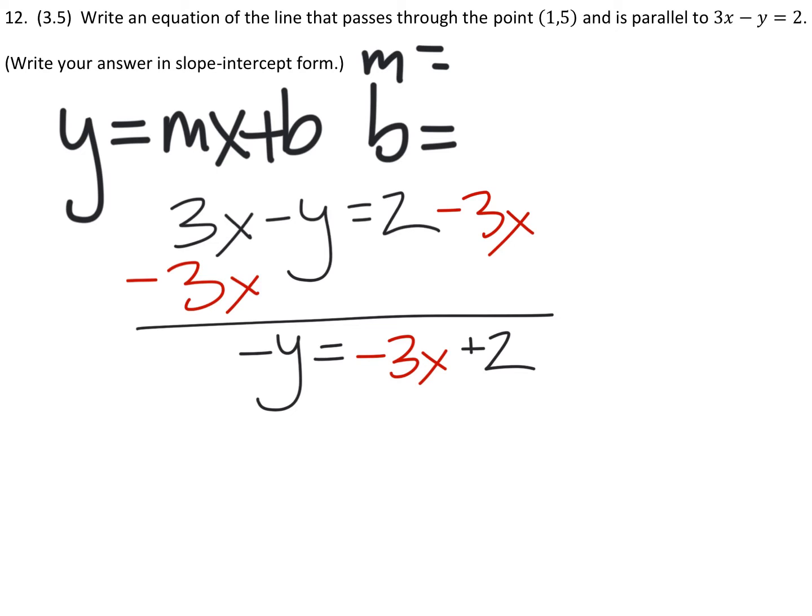And that gives us this equation, where the only problem with this not being complete is that the y value is negative. What that means is we could write a negative 1 there, giving us a coefficient of y, or a phantom negative 1. And we're just going to need to divide all the terms by negative 1. And that gives us this equation, y equals 3x minus 2.